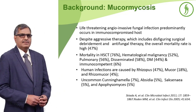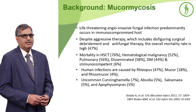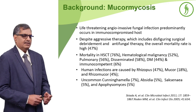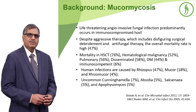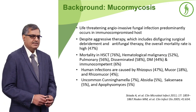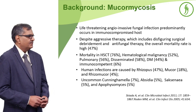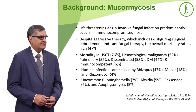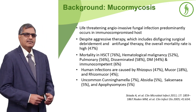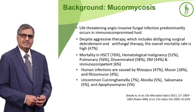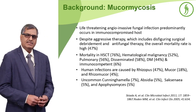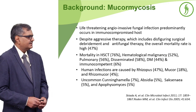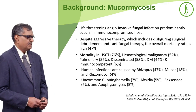Human infections are generally caused by Rhizopus. Almost half of the patients with mucormycosis have Rhizopus infections. Mucor comprises 18% and Rhizomucor 4%. There are other rare and uncommon species which also produce mucormycosis: Cunninghamella, Absidia, Saksenaea, and Apophysomyces.